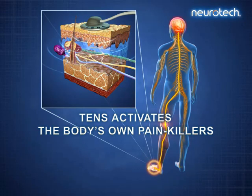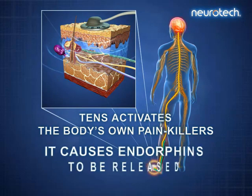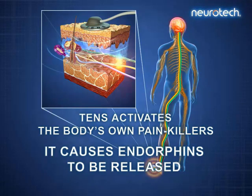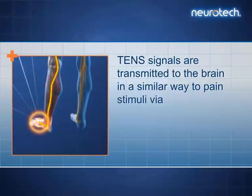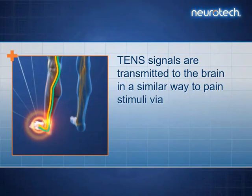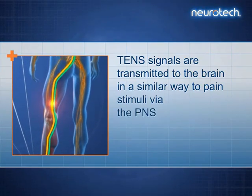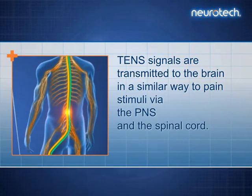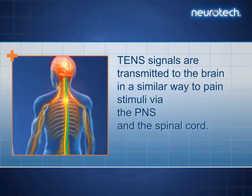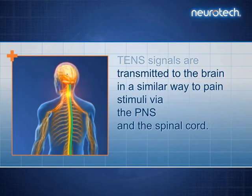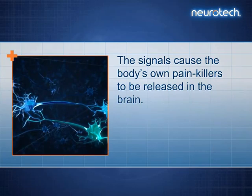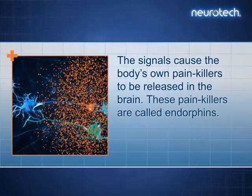TENS activates the body's own painkillers — it causes endorphins to be released. TENS signals are transmitted to the brain in a similar way to pain stimuli via the PNS and the spinal cord. The signals cause the body's own painkillers to be released in the brain. These painkillers are called endorphins.